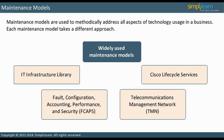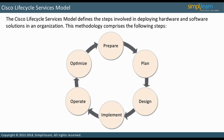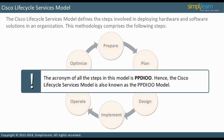In the next slide, we will start a detailed discussion of the Cisco Lifecycle Services model. The Cisco Lifecycle Services model defines the steps involved in deploying hardware and software solutions in an organization. The word Lifecycle denotes that there is always change in an organization, consequently necessitating a repetition of the stages. This methodology comprises six steps: Prepare, Plan, Design, Implement, Operate, and Optimize. The acronym of the steps is PPDIOO, hence it is also known as the PPDIOO model.